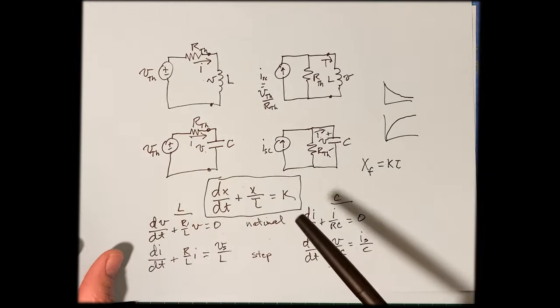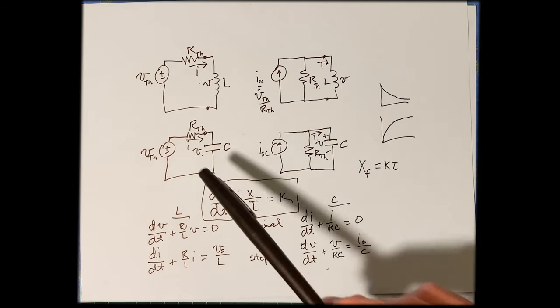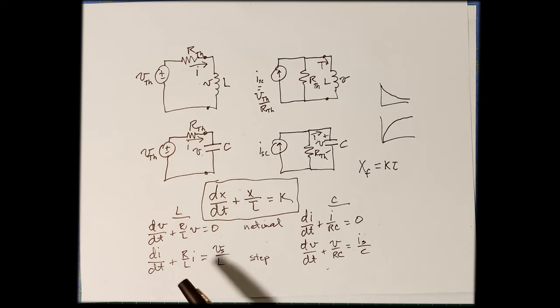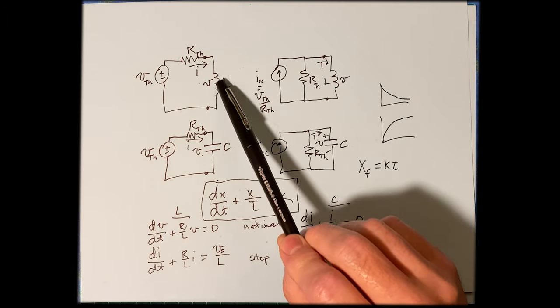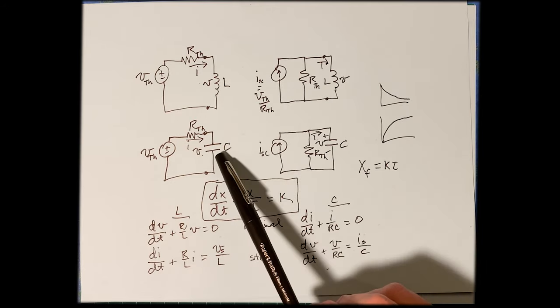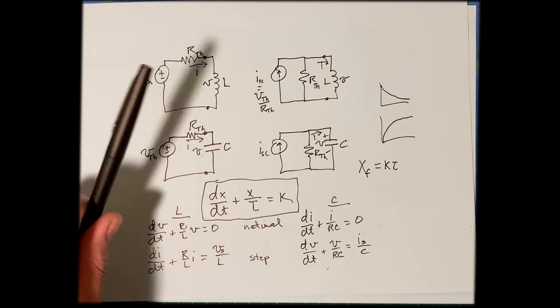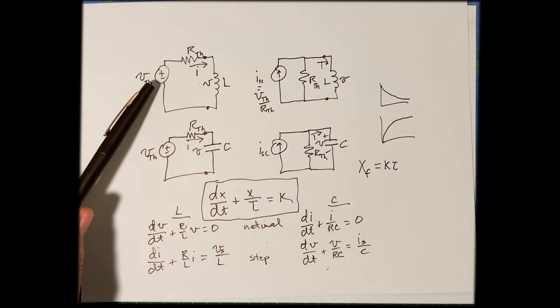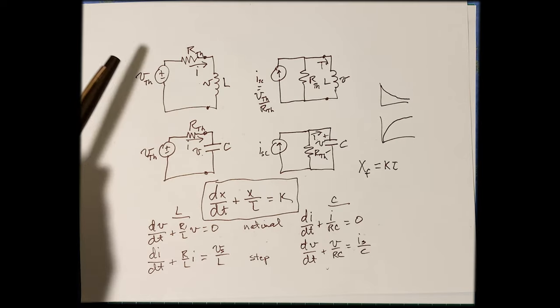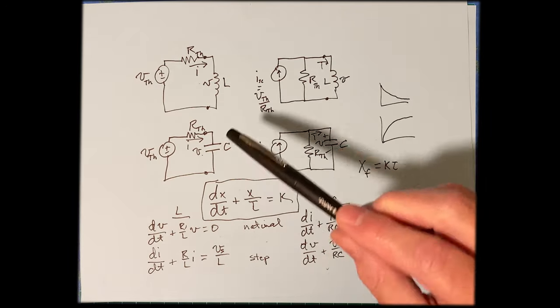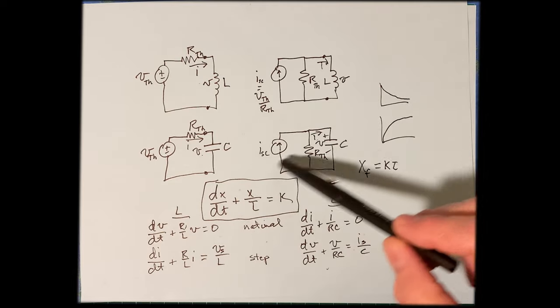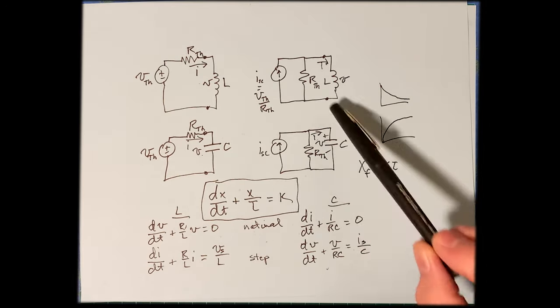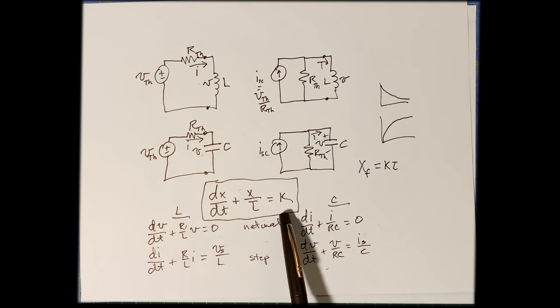In this video we're going to solve some RC and RL circuits using the techniques that we've learned. Any circuit can be reduced down to a Thevenin or Norton equivalent. Once you know those equivalents you can treat the inductor or the capacitor as the load. We've got a situation where we have one inductor and one resistor. If there's a source it's going to be a step response; if the source is not there it's going to be a natural response. The general solution applies for all of these circuits, which all have the same general equation of state.